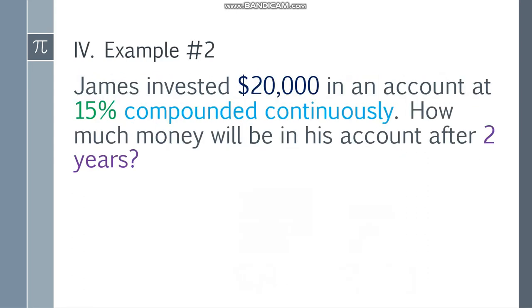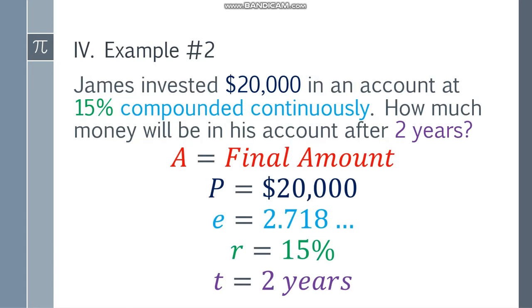Next one. Example number 2. James invested $20,000 in an account at 15% compounded continuously. So always remember this phrase: compounded continuously. How much money will be in his account after 2 years? Final amount is what we're looking for. List the given values. A will be the final amount. P will be $20,000. E will be 2.718. R will be 15%. And t will be 2 years.